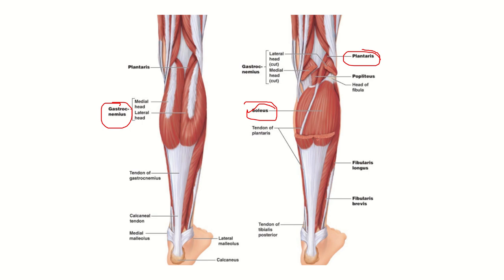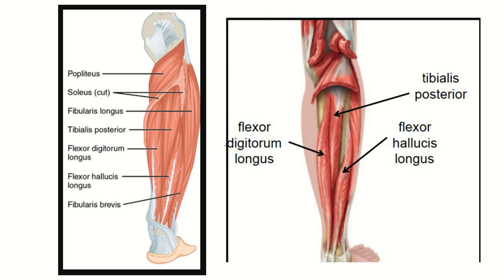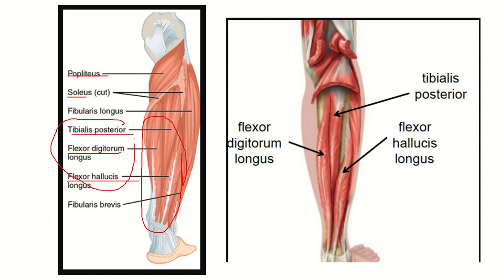When the superficial muscles are removed, the deep posterior compartment is explored. Here we can see the popliteus and soleus have been removed, revealing the deep posterior group. These are tibialis posterior, flexor digitorum longus, and flexor hallucis longus — the three important muscles located in the deep posterior compartment of the leg.